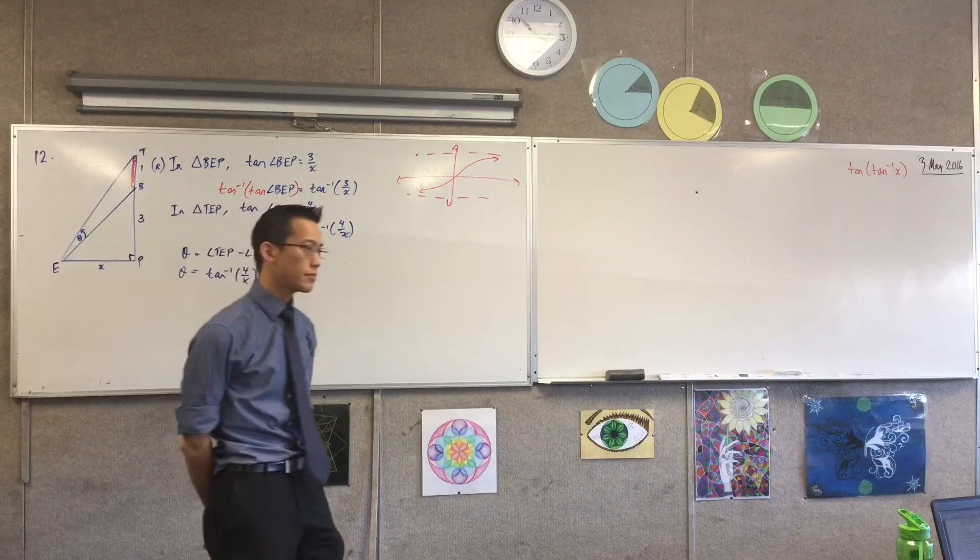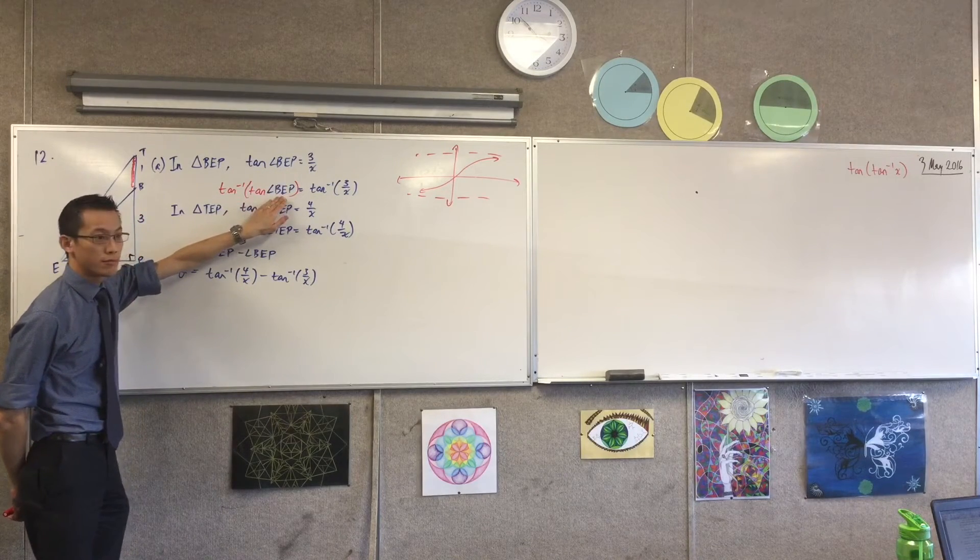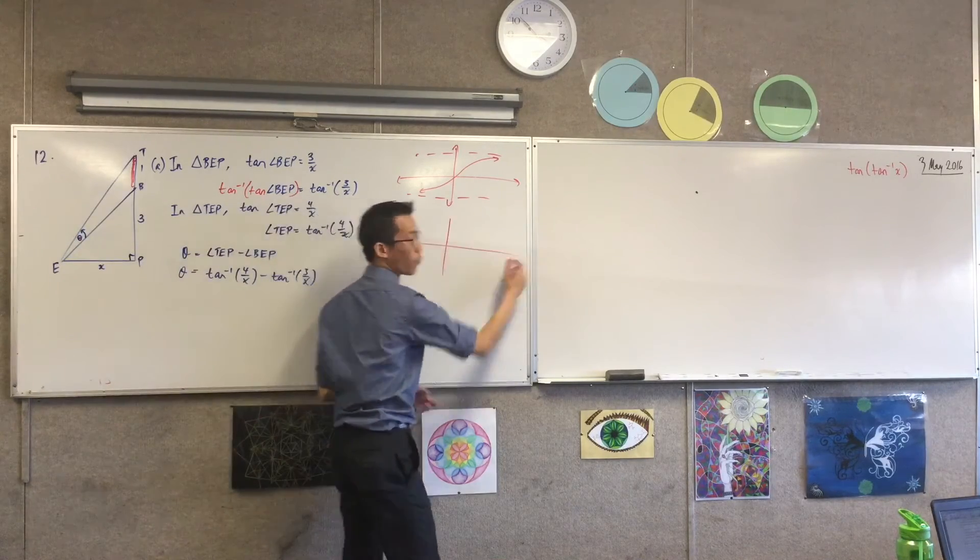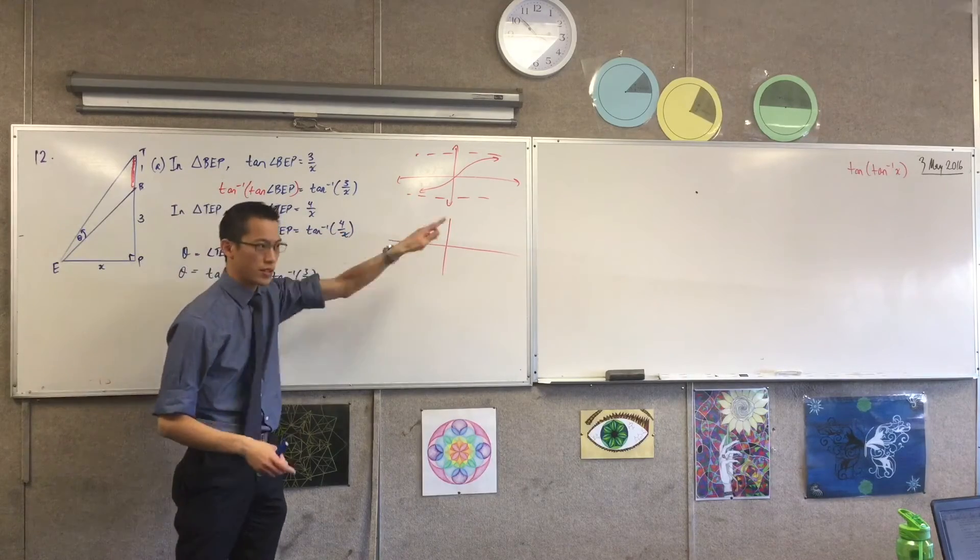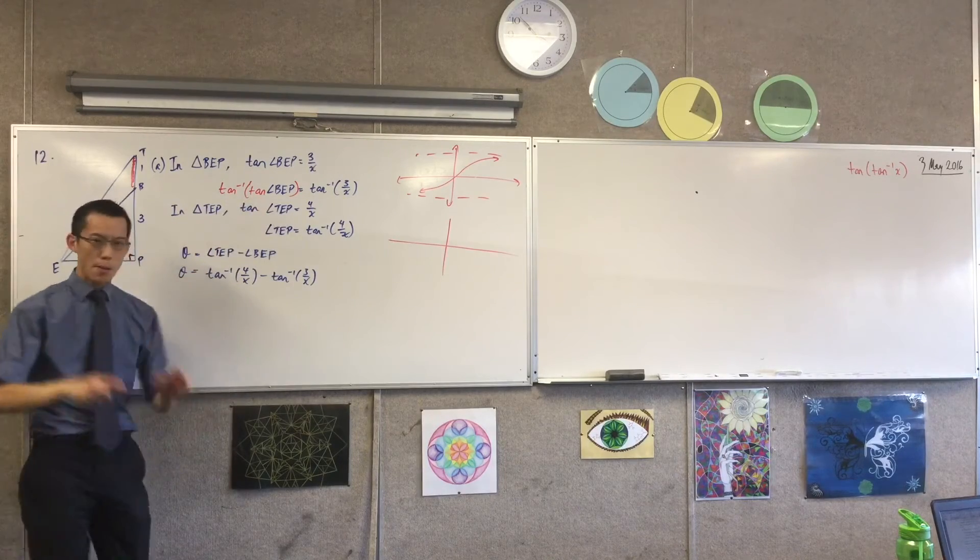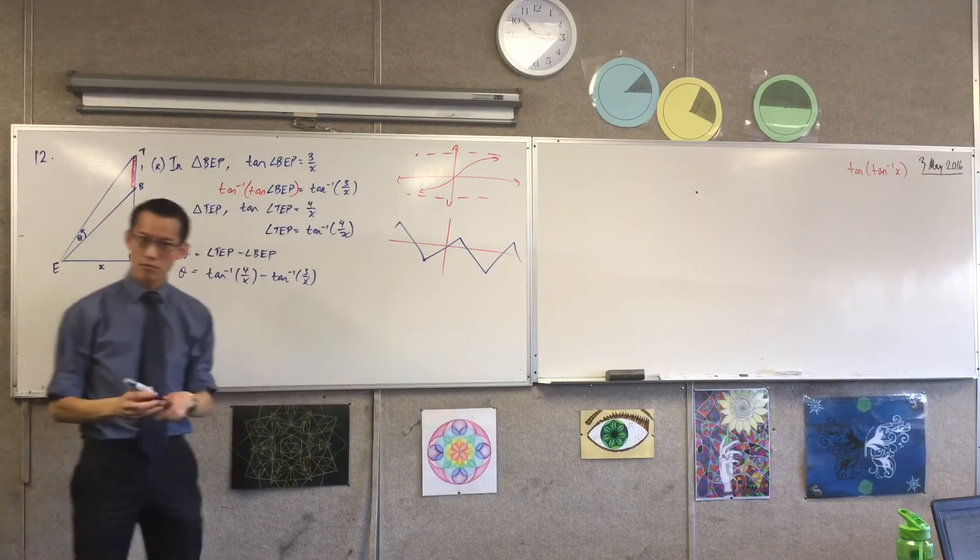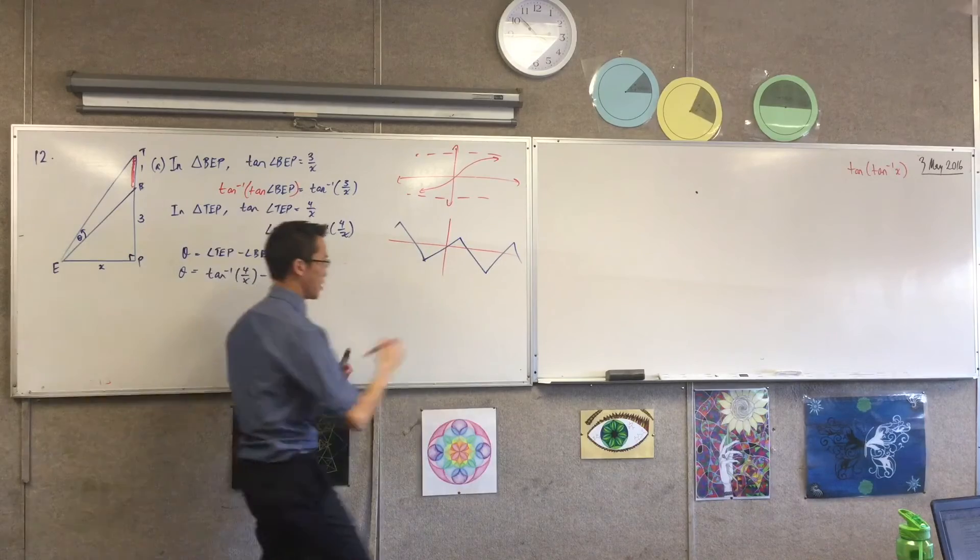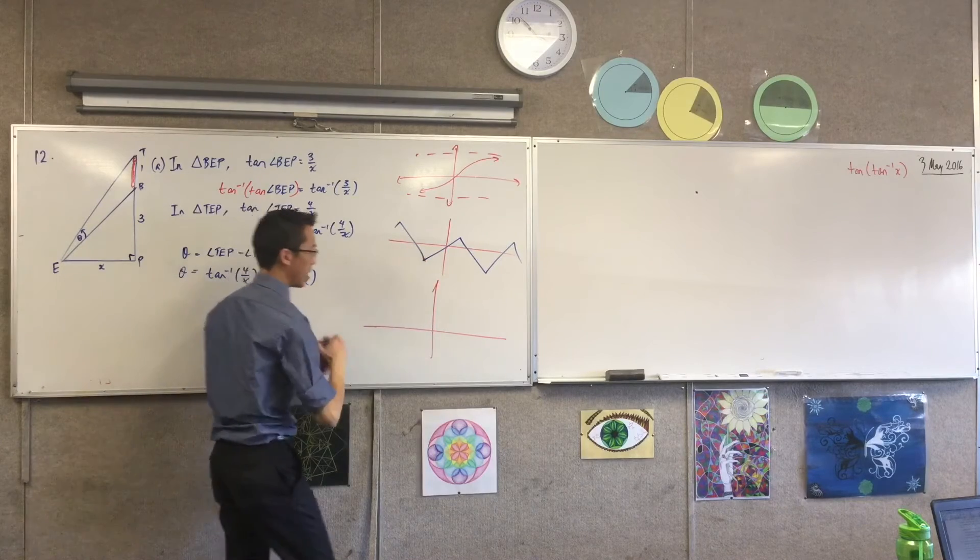Do you remember when I showed you, when we have sine of sine inverse, cos of cos inverse, it's all nice and neat. But when you have the inverse on the outside, you're doing that one second, you do this one first. For sine inverse of sine we got this weird guy. Do you remember that? Did anyone work out what cos inverse of cos looked like?